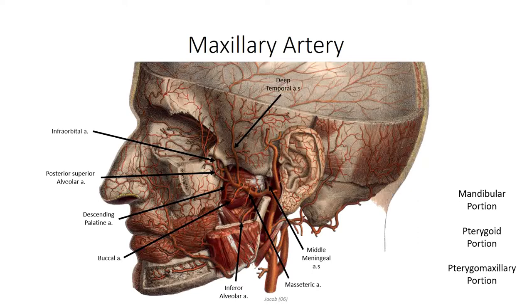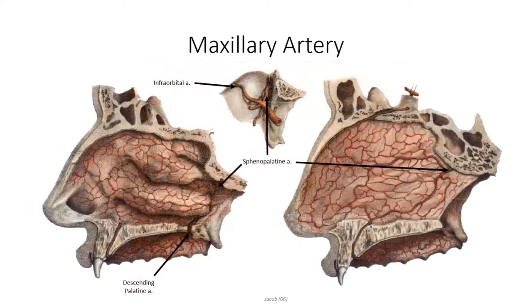An additional branch, known as the artery of the pterygoid canal, projects posteriorly to supply intracranial structures and the upper portion of the pharynx. The terminal portion of the maxillary artery passes medially through the sphenopalatine foramen within the medial wall of the pterygopalatine fossa to enter the nasal cavity. From here, the sphenopalatine artery splits into posterior lateral branches, which run inferiorly within the lateral nasal mucosa, and septal branches that run superiorly over the arch of the nasal cavity then inferiorly to supply the nasal septum.